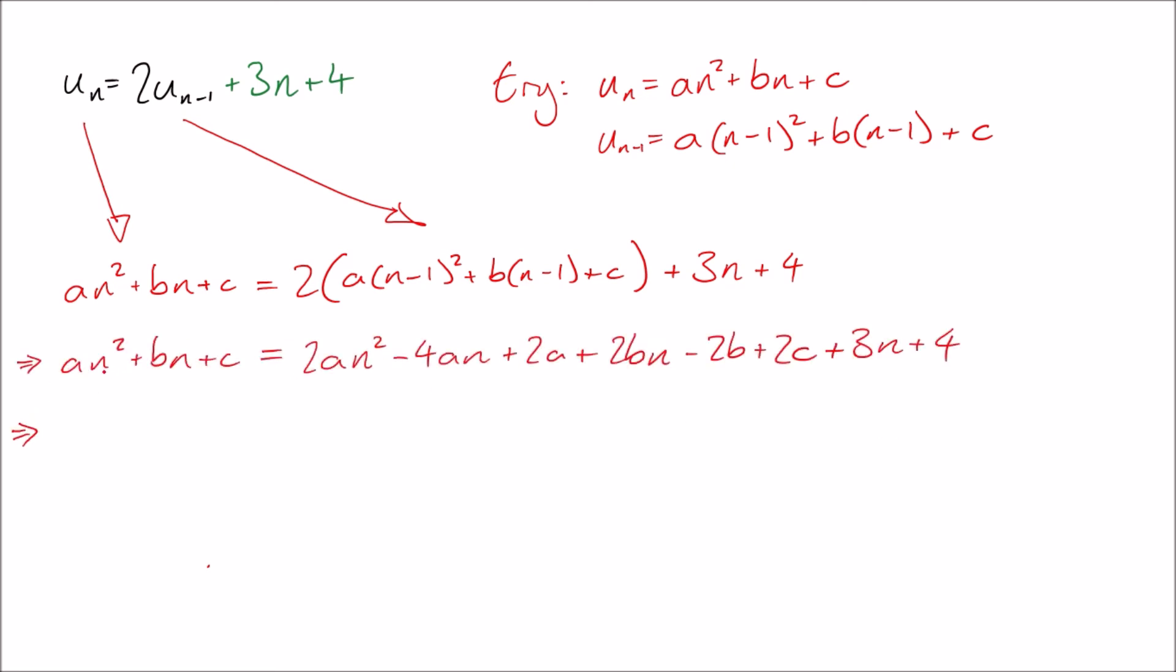Now I'm going to gather all of the powers of n together. So all of the n squareds, all of the ns and all the constants separately. All right, I've gathered together all of the different powers of n. And we remember that this needs to work for every single value of n. And it's an identity, so we're allowed to equate coefficients.